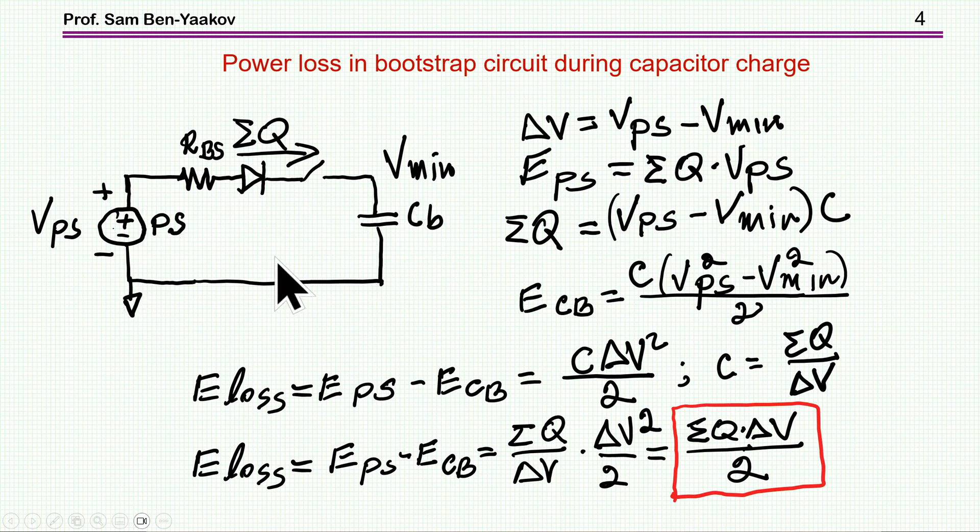I'm starting with the definition of delta V, which is the final value that this capacitor will reach and the initial value. The energy that the source has to deliver to the capacitor is the total charge to be delivered times the voltage of the source. The total charge depends on the difference between the voltage. I'm starting with V_minimum going up to V_PS, and then times C is the total charge that I need.